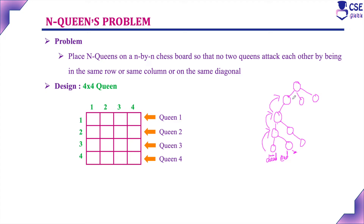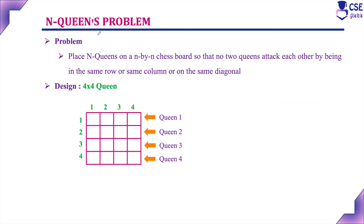The backtracking technique can be implemented with the help of the state space tree. This state space tree initially starts with the initial node and proceeds to the next level component to provide the feasible solution. This state space tree can be implemented using DFS — depth-first search — along with the backtracking technique.